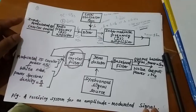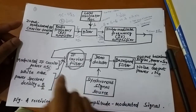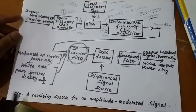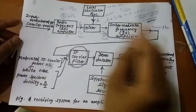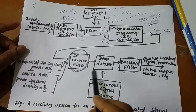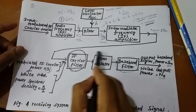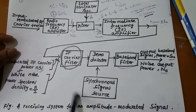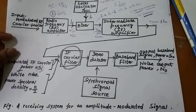Good morning students. Today we will discuss different amplitude demodulators and their threshold. The receiving system for an amplitude modulated signal has the same block diagram; the change occurs only in the demodulator part. It can be a synchronous detector, a square law detector, or an envelope detector.